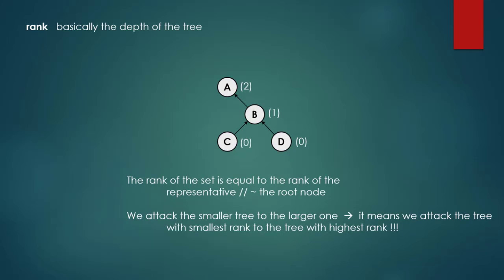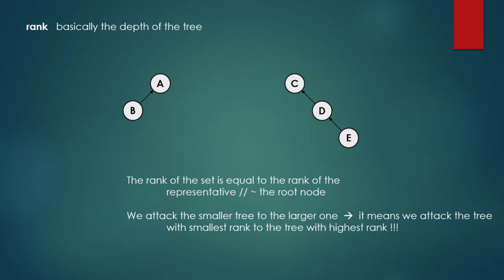The rank is basically the depth of the tree. Leaf nodes have rank 0, parents of leaf nodes have rank 1, and parents of those have rank 2. The rank of the set equals the rank of the representative or root node. We attach the tree with smaller rank to the tree with higher rank, keeping the structure balanced so operations run faster.